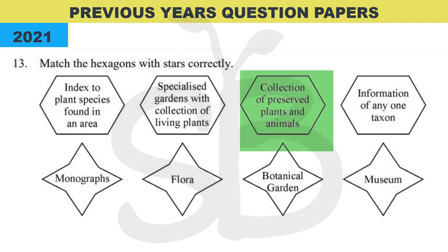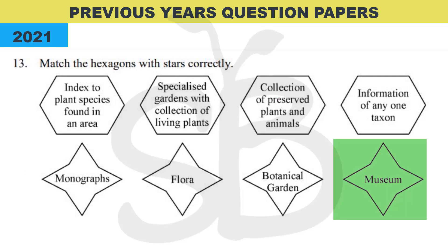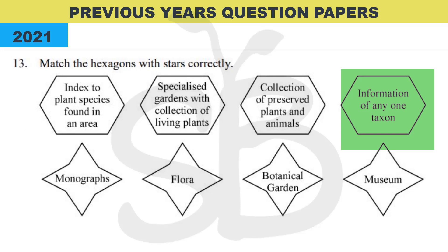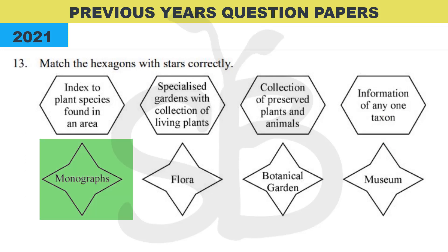The next item is 'collection of preserved plants and animals.' Animals and plants have to be preserved as dead specimens — obviously this is done in a Museum. The last item is 'information of any one type' — this is a taxonomical aid, and the correct answer is Monograph. Mono means single, so monograph represents information on one particular taxon.